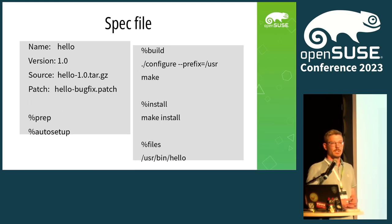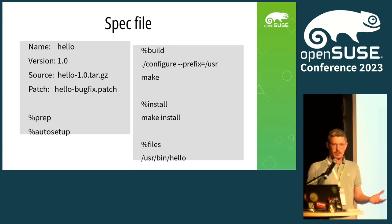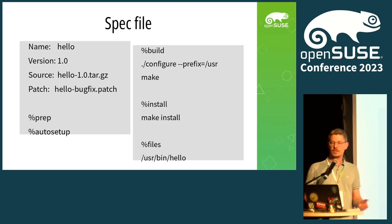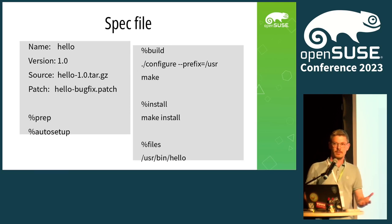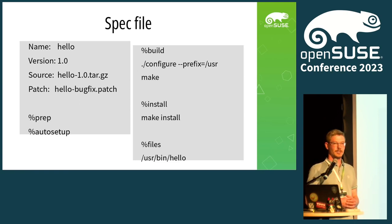Now, this concept with pristine sources and tarballs is I don't know how many decades old. Back in the days, software was uploaded to FTP servers and then you'd download the tarball. So this method is basically brilliant. But nowadays, developers don't really work with tarballs anymore. So it's kind of annoying. And we all know that Git has conquered the world.